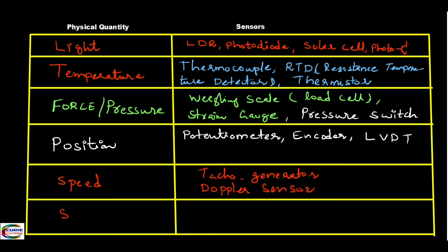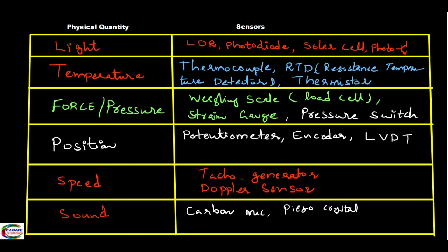Finally, for sound, we use a microphone. There are different types of microphones — a common one is the carbon mic, and there are also crystal-based microphones. These are the basic types of sensors for these physical quantities. Other sensors also exist, such as accelerometers and GPS for angular measurement, but these are the fundamental ones we should know.